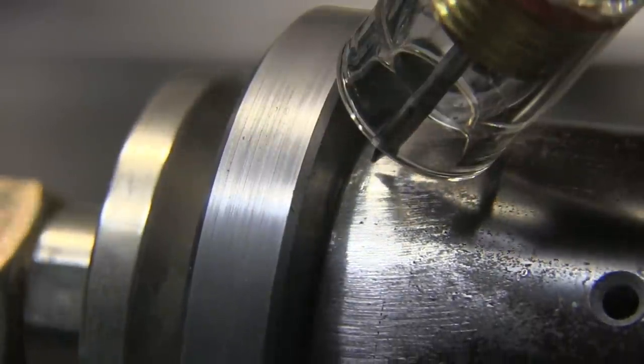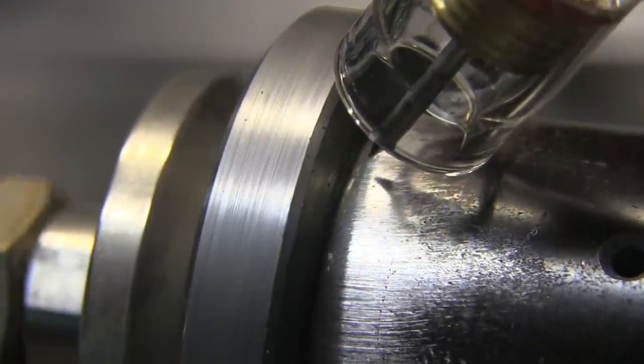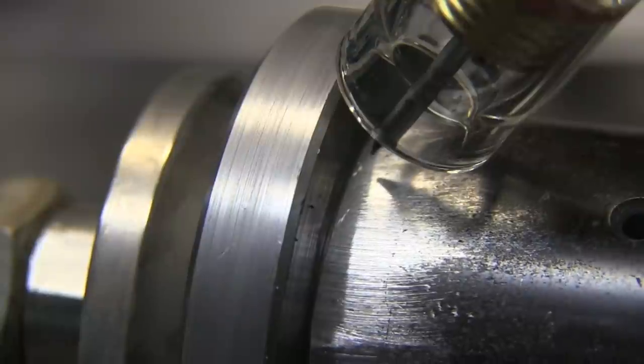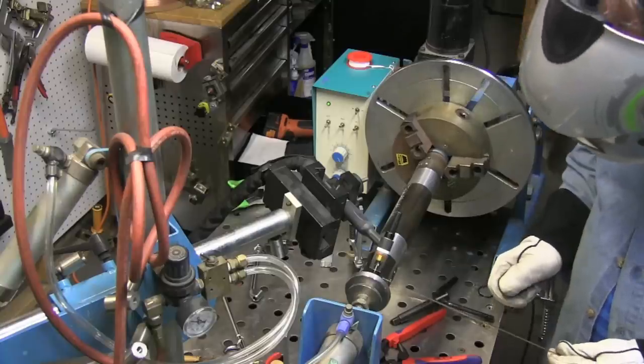Torch comes down, I dial it in and get it pointed right into the root of the joint like that. It takes a little practice to know the arc length and what you need to do there.